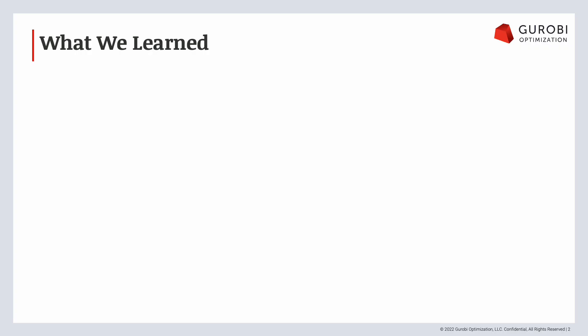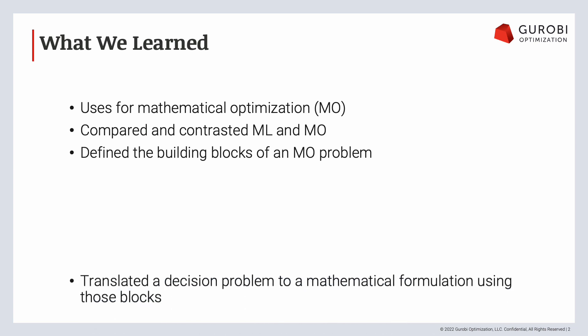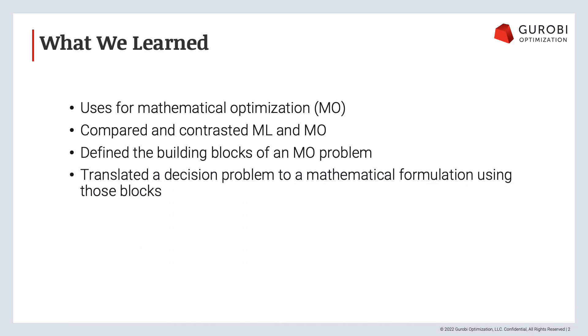Let's take a very quick trip down memory lane to recap what we've learned. First, we looked at the uses of mathematical optimization — the industries, the business problems, things like that. We then compared mathematical optimization and machine learning: what are the different questions that they answer, and why are MIPs very hard to solve? We defined the building blocks of a mathematical optimization problem: decision variables, constraints, and objective function. And we translated a decision problem into a mathematical formulation using those blocks.